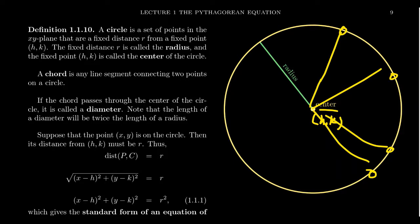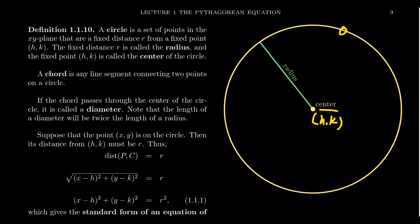So the circle is the set of all equidistant points from the center in the plane. And that's all a circle is — it's just a set of points which are the same distance away.